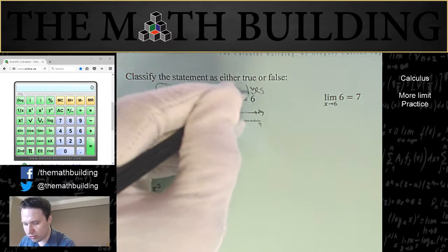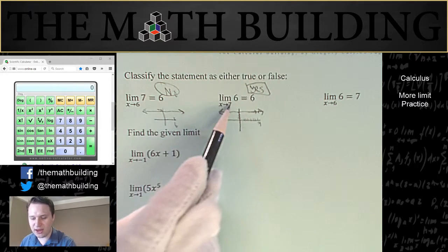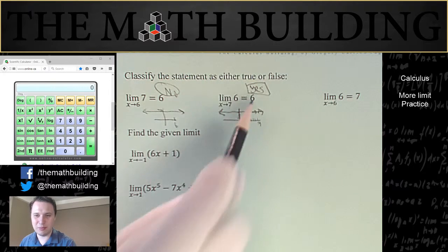So the second statement is true. In fact, x could approach any number here, and the limit would equal 6.